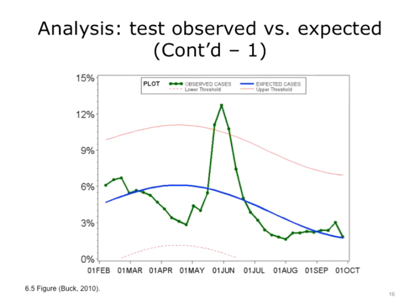Here is an example of EHR syndromic data during the spring 2009 H1N1 outbreak. The vertical axis represents the percent of all patients meeting the ILI case definition; the horizontal axis represents time. The blue line shows the expected number of cases based on a seasonal regression. The red lines show the upper and lower thresholds — a 95% confidence interval around expected values. The observed level is plotted each week in green, and you can see a sharp increase with three weeks above the expected threshold.